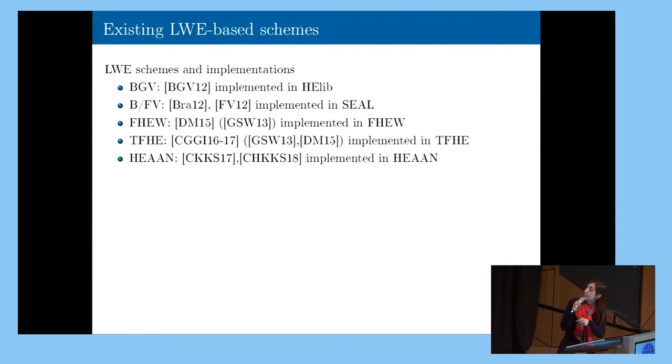The scheme HEAN, which is the last one in the list, is one of the newest schemes proposed. So it was proposed in 2017 by Cheon et al. And in 2018, it was improved with bootstrapping. It's also implemented, and the implementation is open source on GitHub.